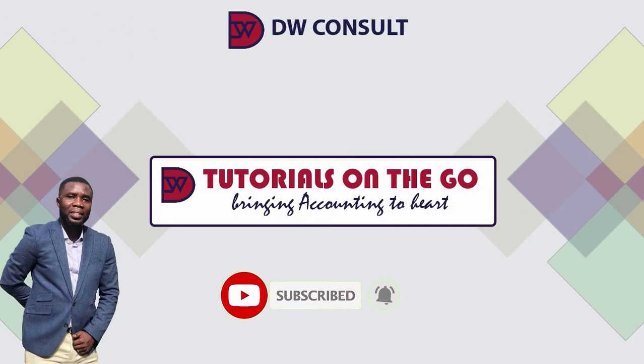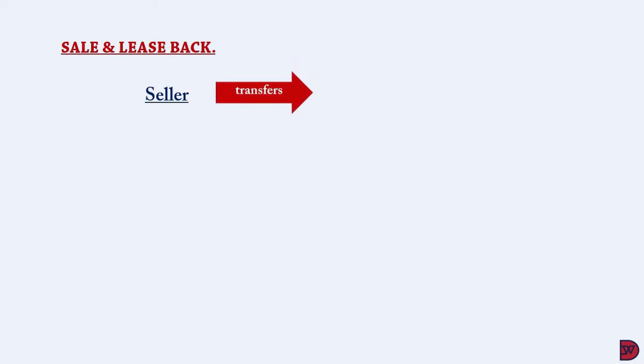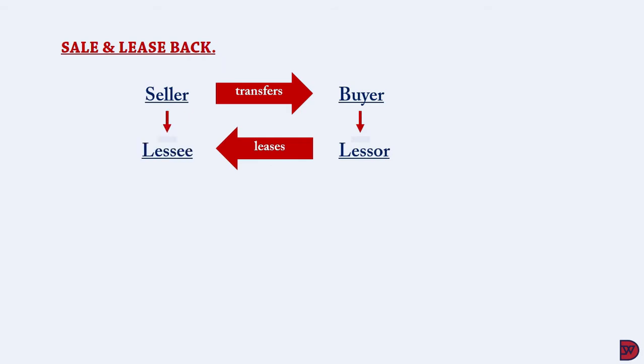Now today's episode's lecture: Sale and Leaseback. A sale and leaseback transaction occurs when one entity, who is the seller, transfers an asset to another entity, who is the buyer, who then leases the asset back to the original seller, who becomes the lessee.